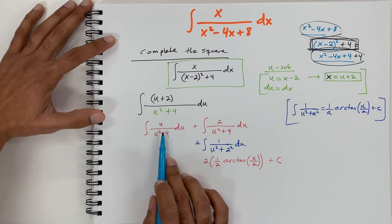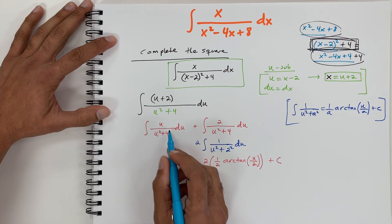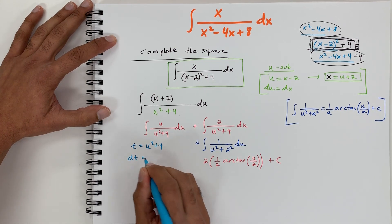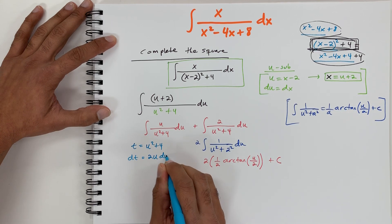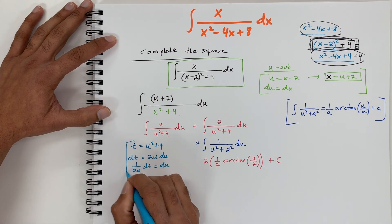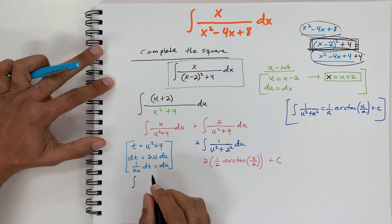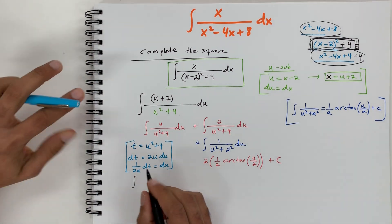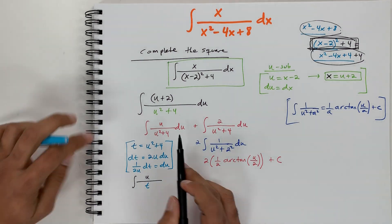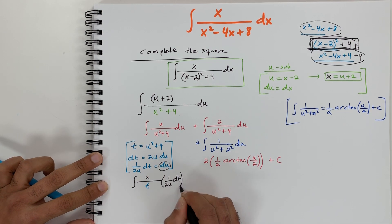For the first integral, let's make a t-substitution. Set t equal to u squared plus 4. Then dt equals 2u du, which means du equals 1 over (2u) dt. Substituting into the integral: u over t times 1 over (2u) dt. The u's cancel, leaving 1 over 2t dt.